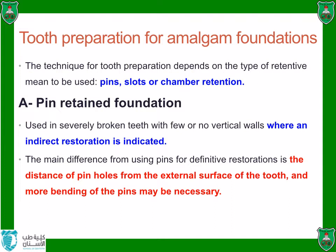For a normal amalgam restoration, we place the pin 0.5 to 1 mm from the DEJ. In the case of an amalgam foundation, we have to move more than that — approximately 1.5 to 2 mm from the junction — to leave adequate distance for the finish line of the indirect restoration.